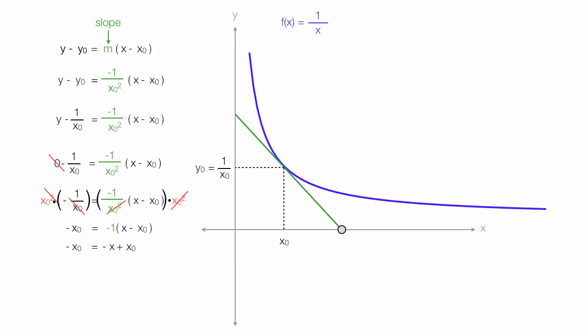Now I subtract x0 from both sides of the equation. So on the left-hand side, I have negative 2x0. And on the right-hand side, I have negative x, and these two x0s cancel each other out. To get rid of that negative, I multiply both sides of the equation by negative 1. So I end up with 2x0 is equal to x. And that is my value for the x-intercept.